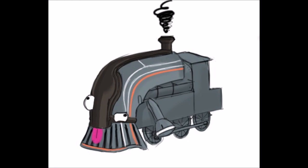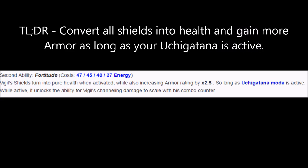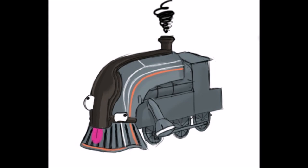Vigil's Sharpen becomes Fortitude, a self-buff that turns all of Vigil's shields into health and increases his total armor by 2.5 as long as Vigil has Ancient Uchigatana active. Also, Fortitude allows the damage that Vigil deals while channeling with his melee weapon to scale with his melee combo counter.